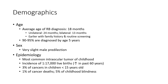90 to 95 percent diagnosis by age 5. There is a very slight male predilection. Epidemiology: retinoblastoma is the most common intraocular tumor of childhood, with an incidence of 1 in 17,000 live births, increasing over the past 60 years. It represents 3 percent of cancers in children under 15 years old, 1 percent of cancer deaths, and 5 percent of childhood blindness.